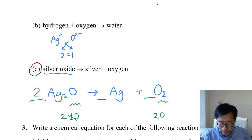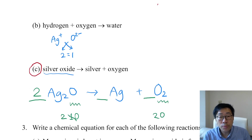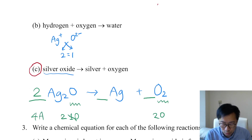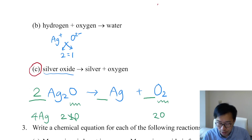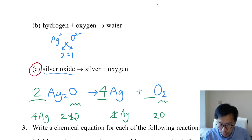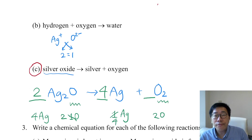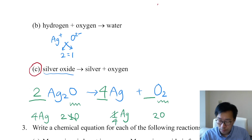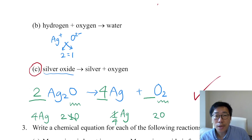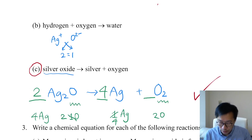By doing this, I also multiplied the whole formula Ag2O by 2. Therefore, I now have 2 times 2 equals 4 Ag atoms on the left. But there is only one Ag on the right, so I put a 4 here, giving four Ag atoms on the right. By doing these steps, you balance this chemical equation correctly.